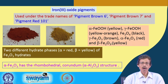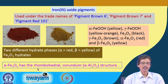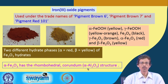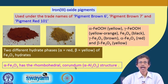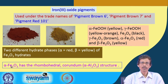Alpha Fe2O3 is red and has a rhombohedral structure, which causes different light scattering and thus different colors. It has a structure similar to alpha alumina (Al2O3). Trivalent aluminum and trivalent iron have very similar ionic radii, resulting in very similar crystal structures.